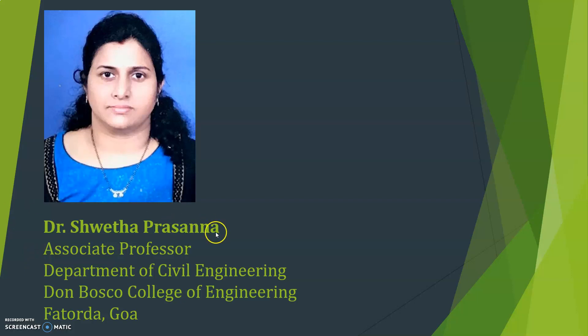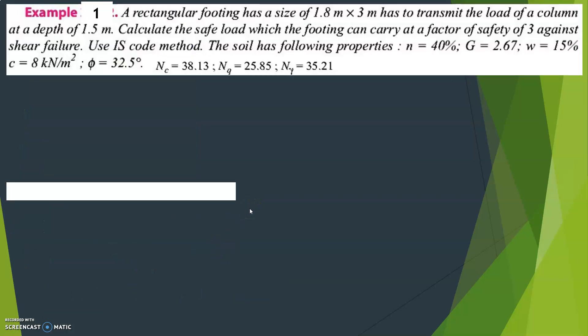Hello my dear students. Let us discuss one example on IS code method. A rectangular footing has a size of 1.8 meter by 3 meter and has to transmit the load of a column at a depth of 1.5 meter. Calculate the safe load which the footing can carry at a factor of safety of 3 against shear failure. Use IS code method.